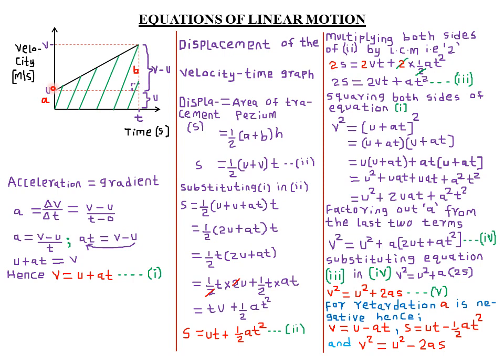Let's consider a uniformly accelerating body whose initial velocity is u and final velocity is v, within a time of t seconds. From linear motion lesson two, where we looked at motion graphs, we said that when dealing with a uniformly accelerating body, the gradient of the velocity-time graph will always give you the acceleration. Therefore, acceleration equals the slope, which is the change in vertical axis values divided by the change in horizontal axis values.